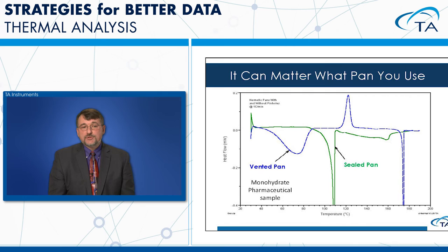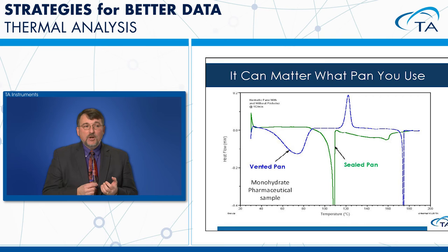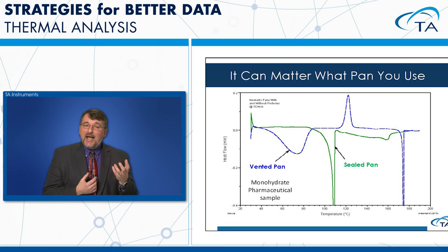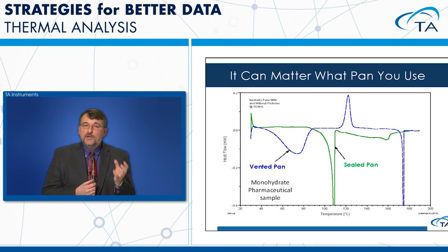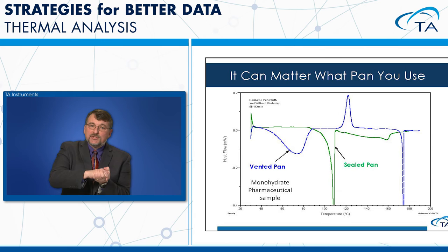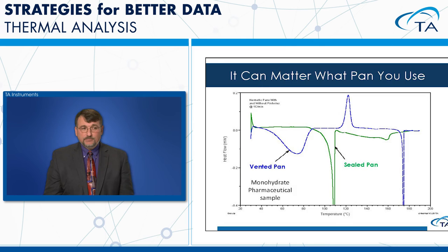Pan selection can significantly affect data. A pharmaceutical monohydrate sample illustrates this: the blue curve in a vented pan shows a broad endotherm from hydrate volatilization, followed by recrystallization and then melting. In the green curve using a sealed pan, the data is dramatically different — the hydrate is retained. If you want to characterize the sample as a hydrate, run it in a sealed pan. Sometimes you may want to run it both ways, but the pan type can change your data significantly.